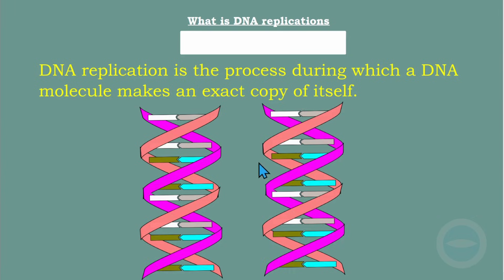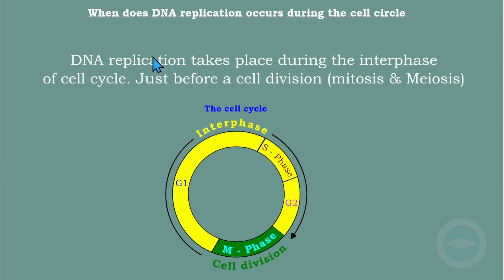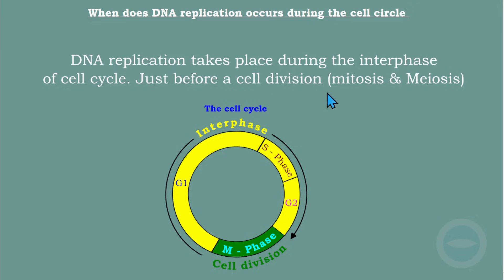The next question: when does DNA replication occur during the cell cycle? DNA replication takes place during the interphase of the cell cycle, just before cell division, which is mitosis or meiosis. We will be looking at meiosis in the next topic.